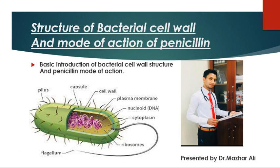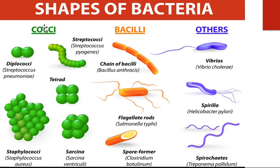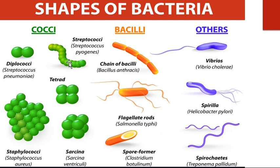Let's talk about the basic types of bacteria. These are the shapes of bacteria: this is a cocci bacteria, this is a bacilli bacteria, and these are other types of bacteria with different shapes. In cocci, an example is Streptococcus pneumoniae, which is a cocci bacteria. Then there is Staphylococcus aureus, also a cocci bacteria, and Streptococcus pyogenes, which can cause pus — that's why we call it pyogenic streptococcus.